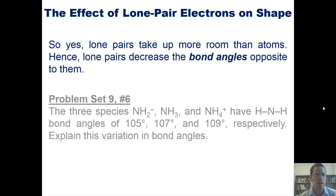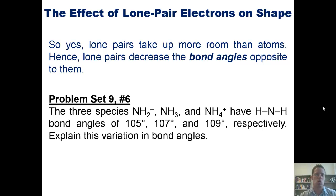Brings us to a wonderful problem. The three species NH2- that has two lone pairs on the central nitrogen, NH3 which has one lone pair on the central nitrogen, and NH4+ which has zero lone pairs on the central nitrogen, have hydrogen-nitrogen-hydrogen bond angles of 105, 107, and 109 degrees respectively. Explain this variation in their bond angles. And no, I'm not going to do it. I'll let you try it on your own.